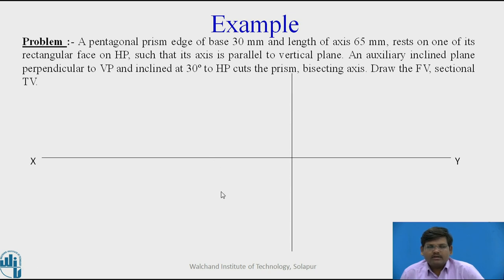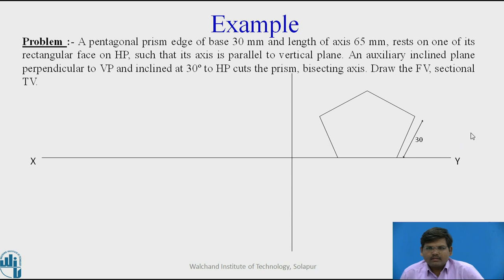Since the axis is parallel to both HP and VP, and perpendicular to the profile plane, instead of starting with the front view or top view we start with the side view. In the side view we draw a pentagonal structure — this is the rectangular face on which it rests on HP. This is the pentagon of 30 mm, and these are the namings for the side view of the pentagonal prism resting on rectangular face 3-4 with axis parallel to HP and VP.